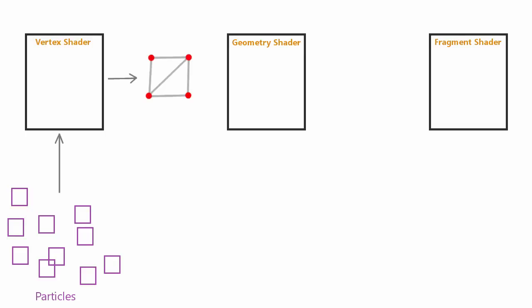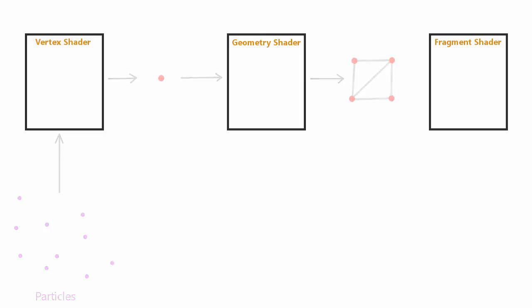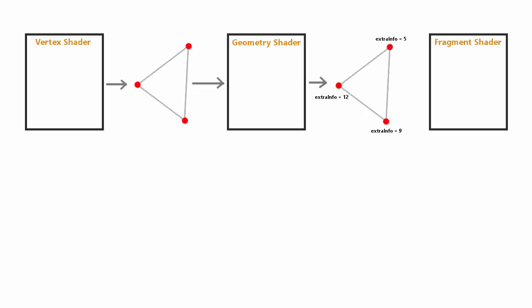One example where the geometry shader is useful is particle systems. Instead of rendering a quad for each particle, we could render a single point per particle and use the geometry shader to generate the quad on the GPU — or even a cube or more complex mesh for 3D particles. The geometry shader is also useful for calculating additional information about vertices that can be passed to the fragment shader, since it has access to all vertices in a primitive, unlike the vertex shader.